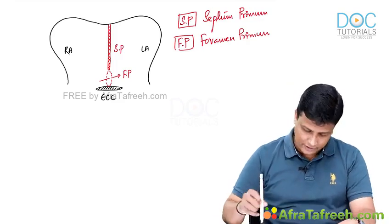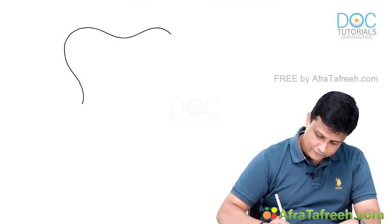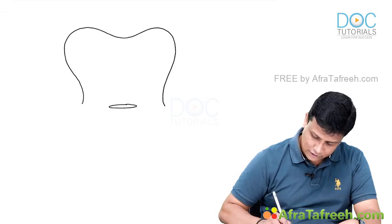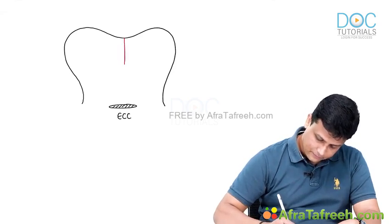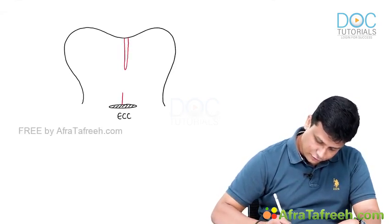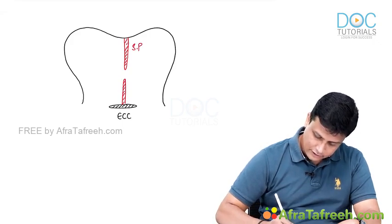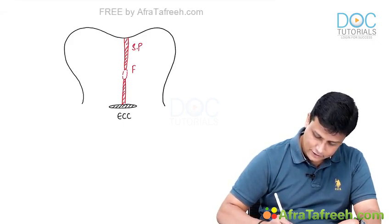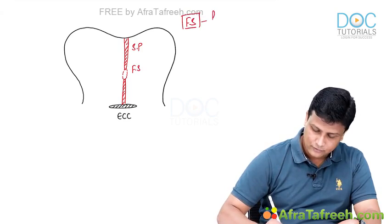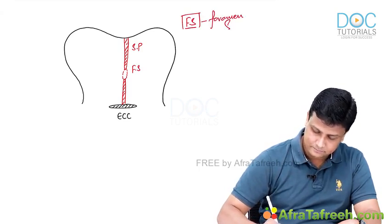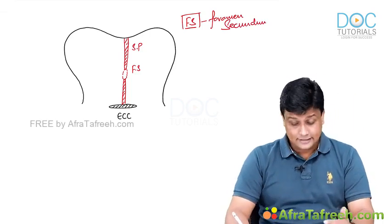Let us draw the diagram of further development. The same diagram: right atrium and left atrium with the endocardial cushion in the middle. Septum primum moves down and fuses with the endocardial cushion. In the middle of that, one more foramen is formed — this time it is foramen secundum. FS stands for foramen secundum — secundum meaning the second one, primum meaning the first one.